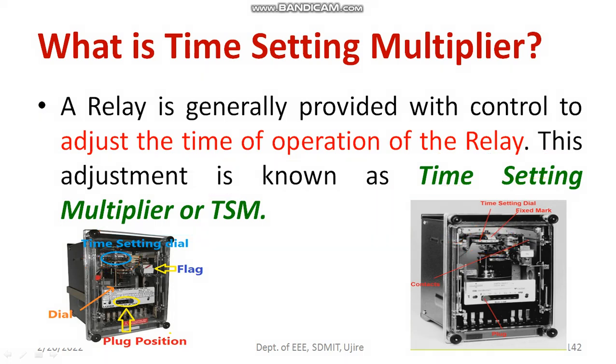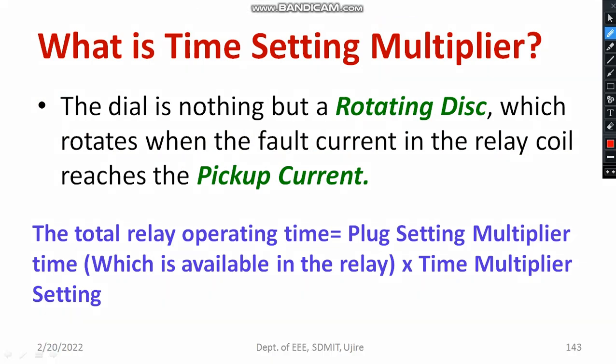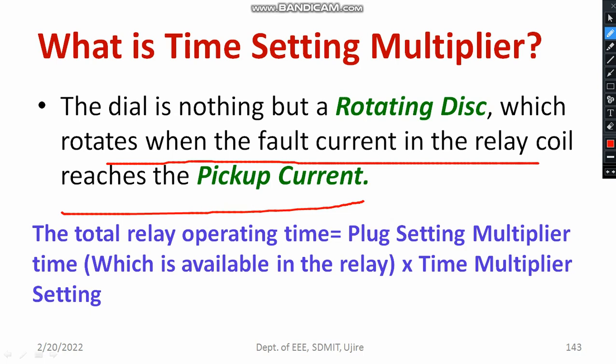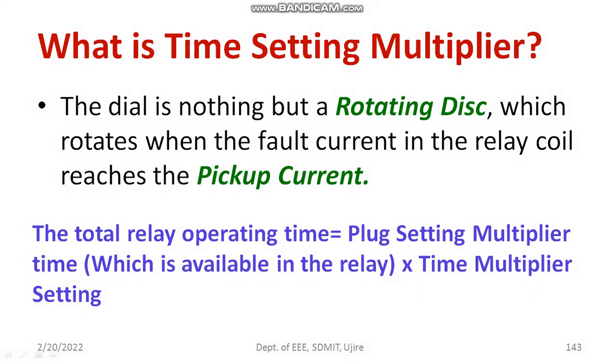I will be making a separate video regarding how it makes revolution, and I will be showing you the prototype settings soon. The dial is a rotating disc made up of aluminum, which rotates when the fault current in the relay coil reaches the pickup current — that is why both settings are connected. To calculate the total relay operating time, you need to know the TSM and the plug setting multiplier time, which is available in the relay itself. If you multiply both, you get the actual operating time of the relay. Time setting multiplier and pickup current are both correlated to each other.